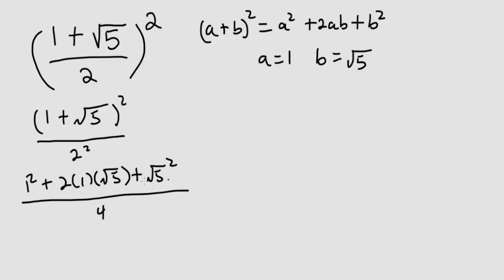So simplifying this a bit, this is 1 plus 2 times the square root of 5 plus this cancels this, so this becomes 5 all over 4.